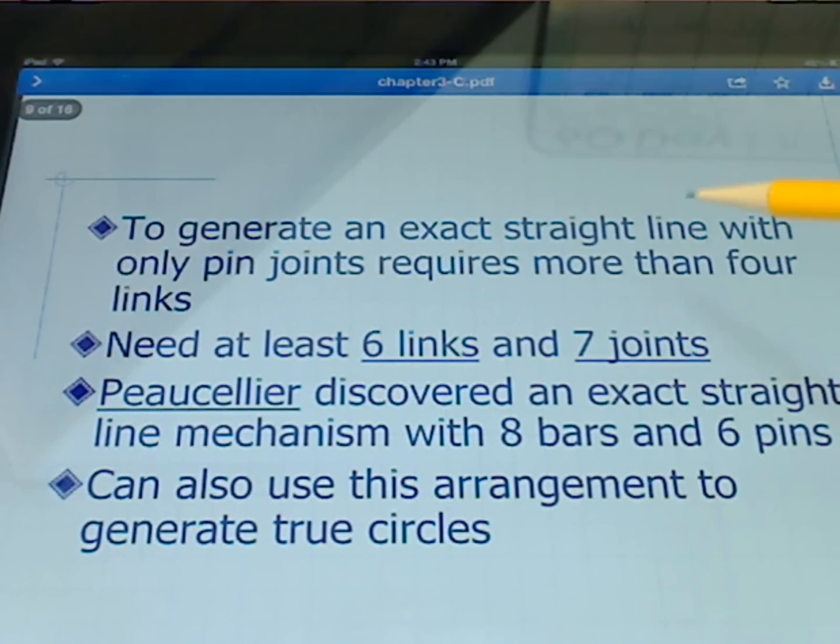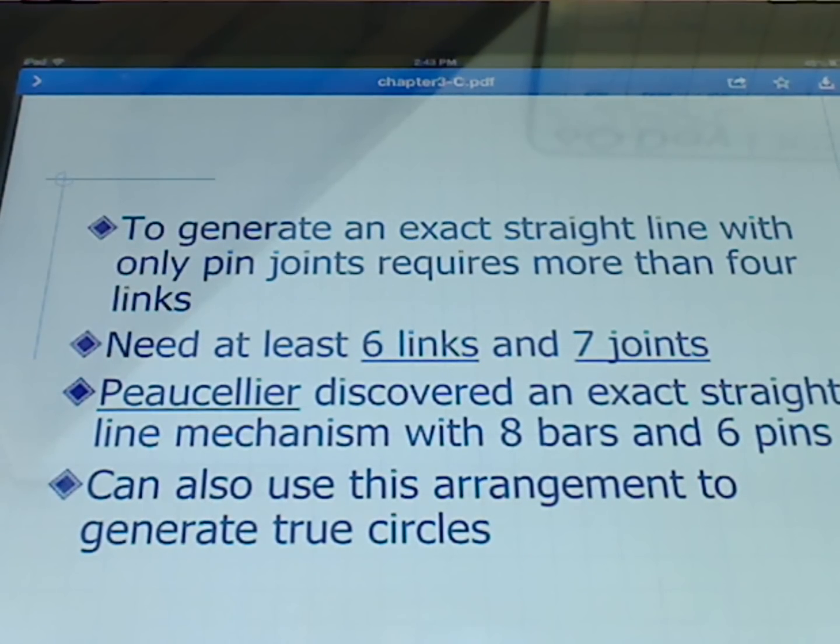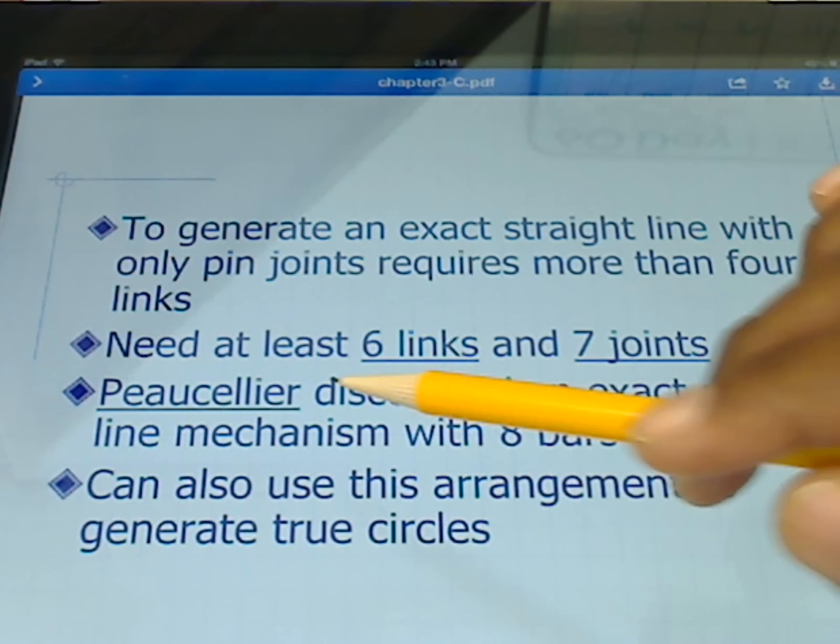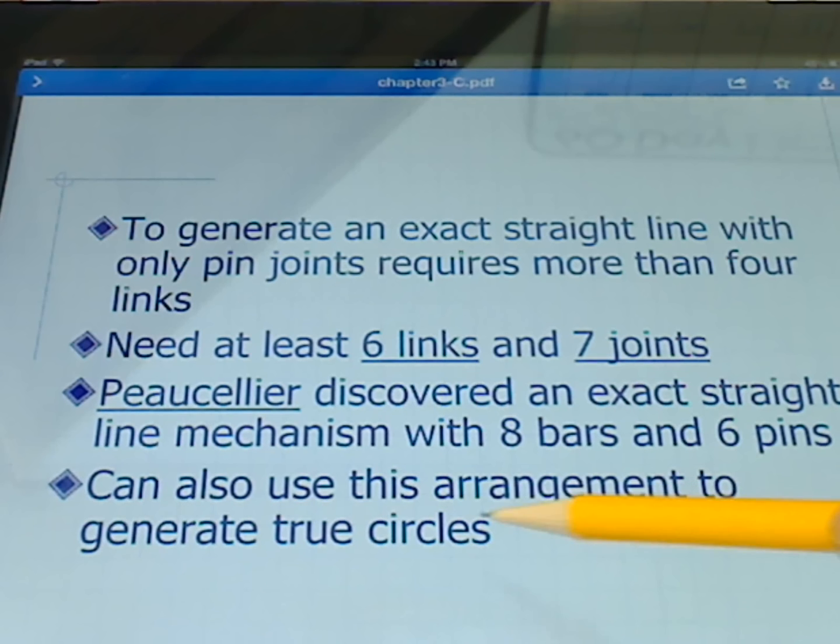To generate an exact straight line with only pin joints requires more than four links. We'll need at least six links and seven joints to do an exact straight line. Peaucellier discovered an exact straight line mechanism with eight bars and six pins. We can also use this arrangement to generate true circles.